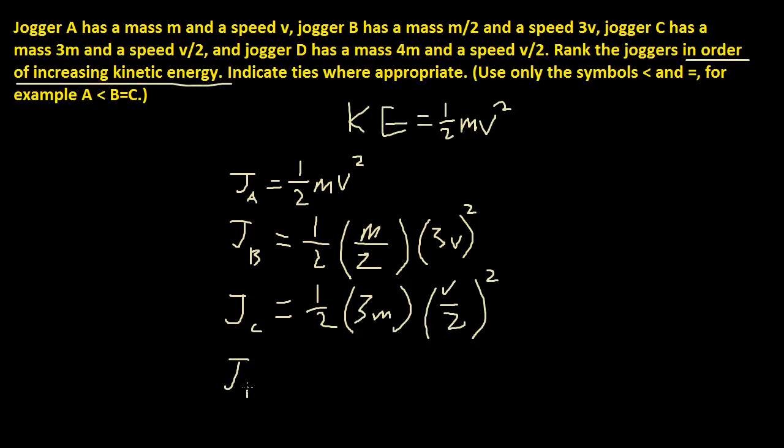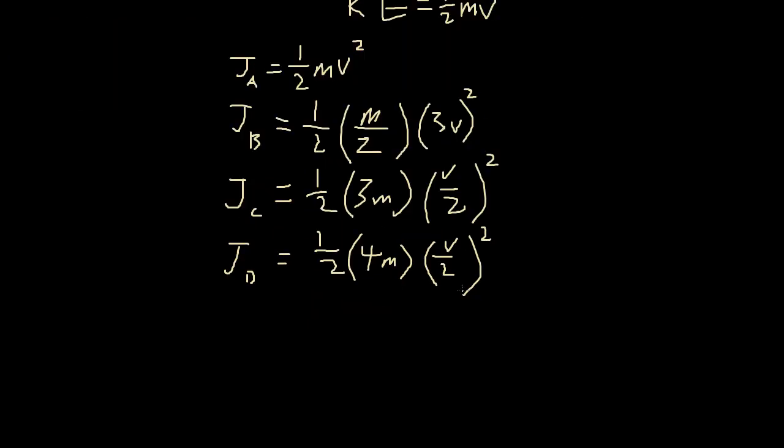And Jogger D. Jogger D has a mass of 4m and a speed of v over 2. So that's squared if you plug it into the equation.